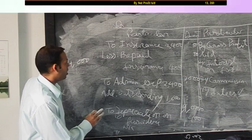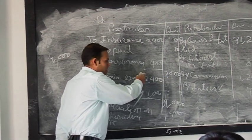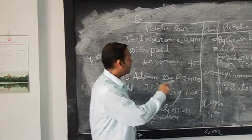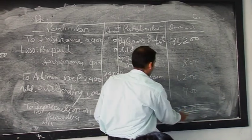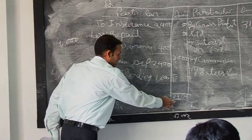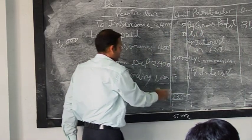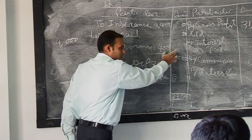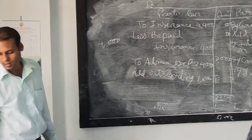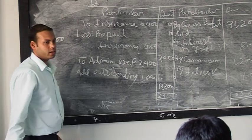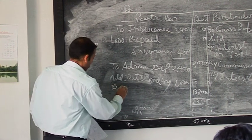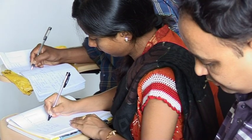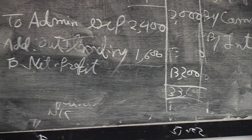We now find whether our business is earning net profit or net loss. If incomes are more than expenses, the result is net profit. The total of the credit side is 33,600. Since the credit side is heavier, we deduct all the expenses from 33,600, and the resulting figure is the net profit. Net profit is transferred to the capital account — written as 'To Net Profit transferred to capital account' or 'To Net Profit c/d.'